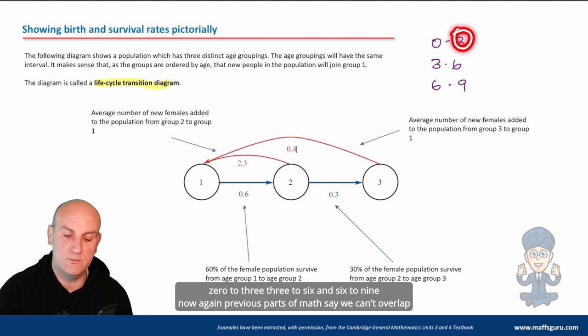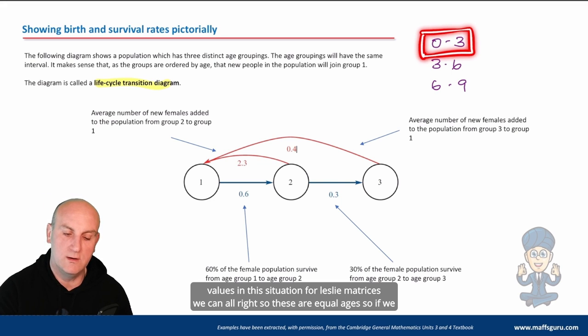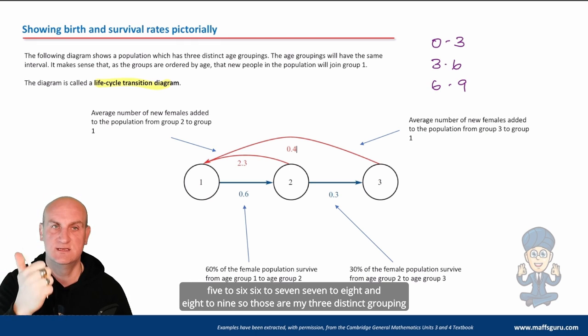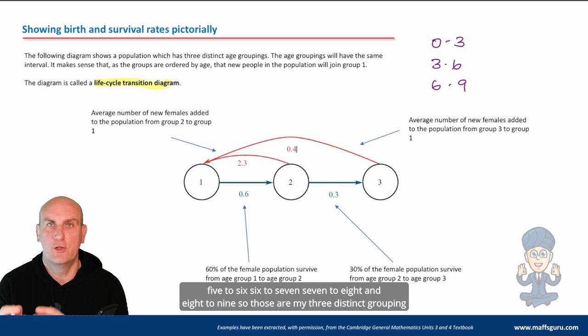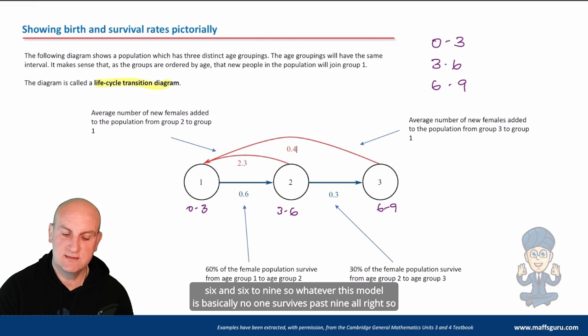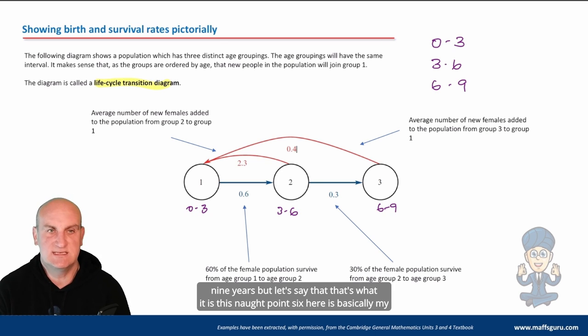Now, previous parts of math say we can't overlap values. In this situation, for Leslie matrices, we can. So these are equal ages. So if we could say zero to one, one to two, two to three, that's three years. Three to four, four to five, five to six. Six to seven, seven to eight, and eight to nine. So those are my three distinct groupings. So this one here could now stand for people who are zero to three, three to six, and six to nine. So whatever this model is, basically no one survives past nine. So I don't know an animal that actually only lives for nine years, but let's say that that's what it is.